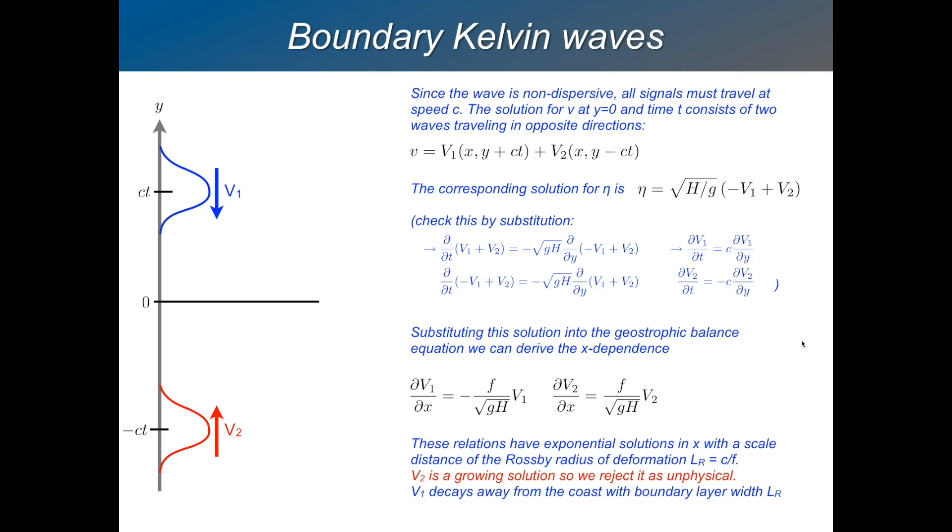So then, if we take that expression for V and substitute it into the geostrophic balance equation, then we end up with two equations separately for V1 and V2 because they're independent and they must both independently be in geostrophic balance. So we can write down an equation for V1 and an equation for V2. So this is dV1 by dx is proportional to minus V1 and dV2 by dx is proportional to plus V2.